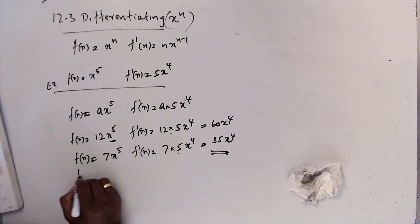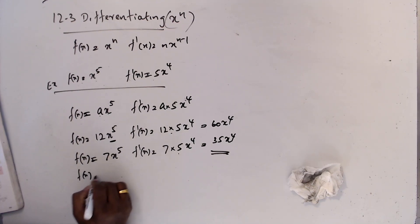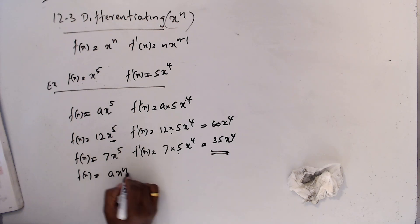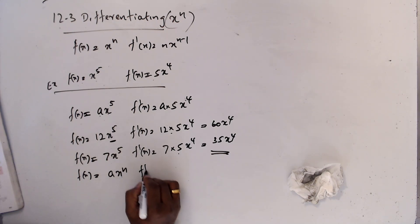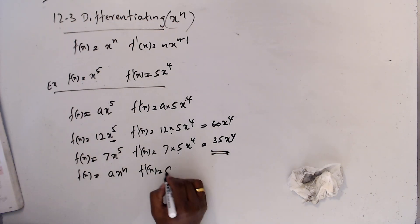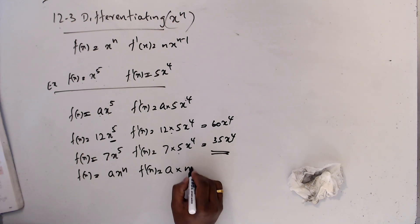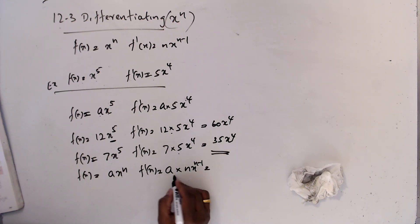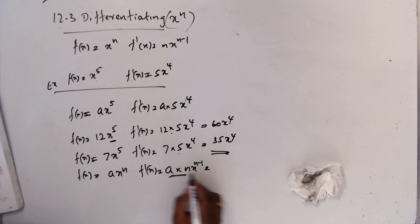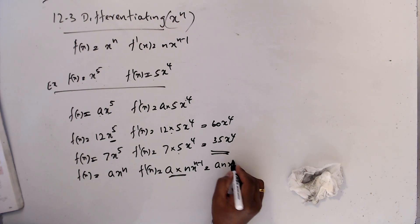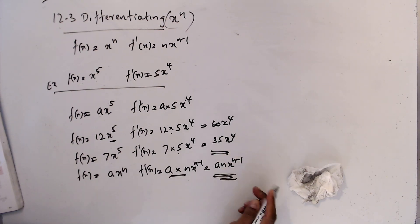In general, if f(x) = a·xⁿ, then f'(x): keep a aside, don't touch it. Differentiate xⁿ to get n·xⁿ⁻¹, so the result becomes a·n·xⁿ⁻¹. That's all.